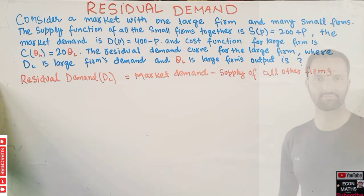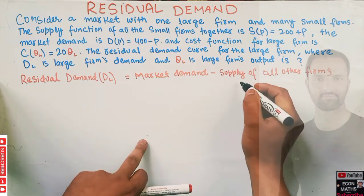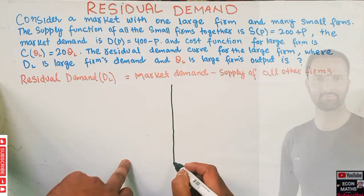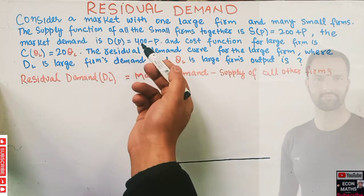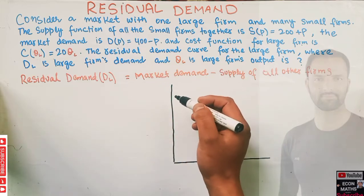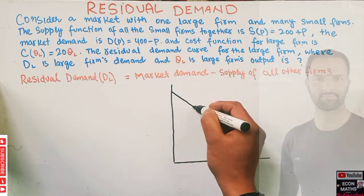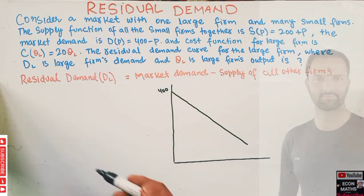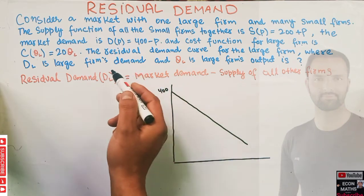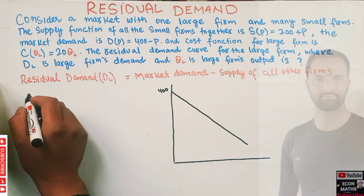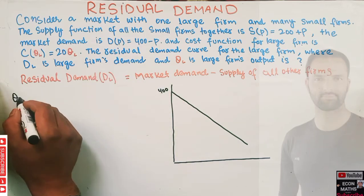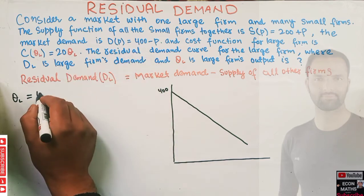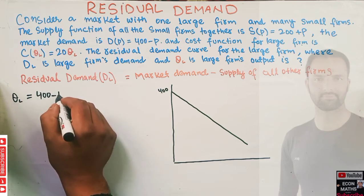Let me show this graphically as well. We draw a graph — this is the total market demand with an intercept of 400. So we write: Q_L (residual demand) = total market demand = 400 minus P.